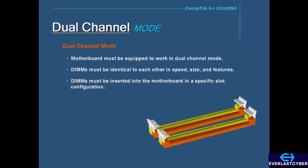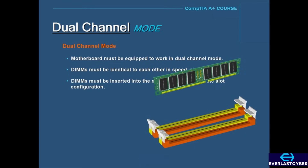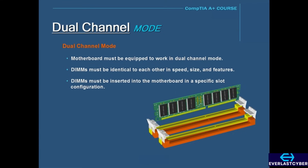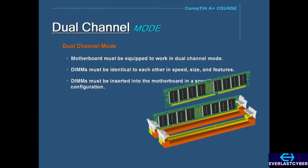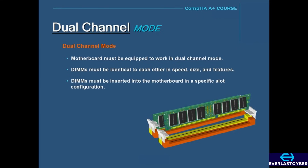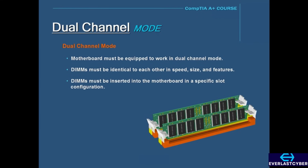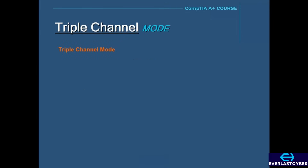For example, here we have some Dual Channel memory slots. In order for Dual Channel to work, you need to install a pair of identical DIMMs in the slots of the same color. In this case, we put a pair of DIMMs in the yellow slots.